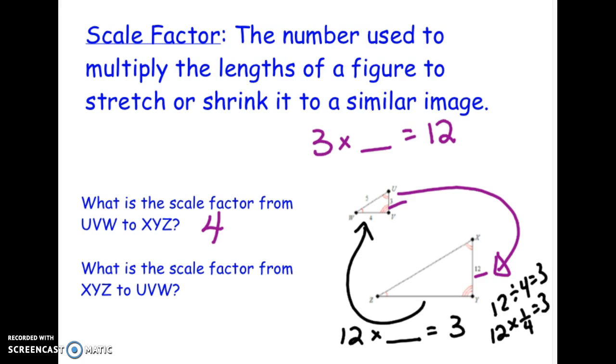So in this case, the scale factor from XYZ to UVW is 1/4. The other way that you can do that is simply do 3 divided by 12 as a fraction and then reduce it. You'll get 1/4.